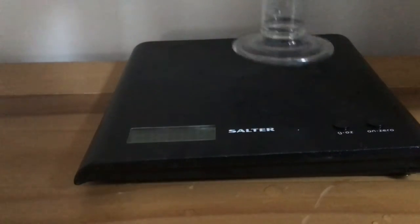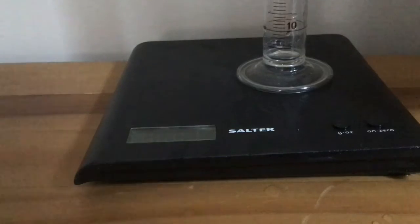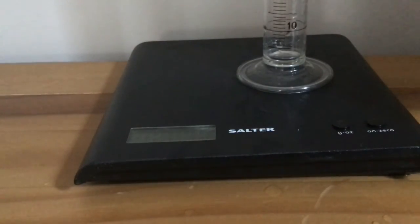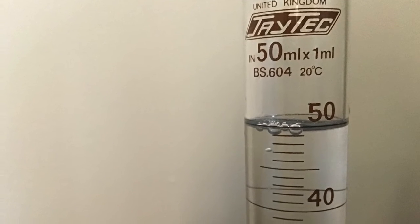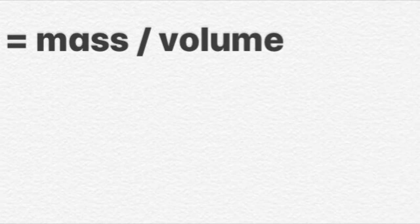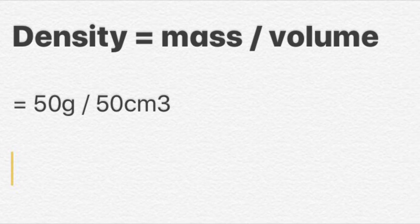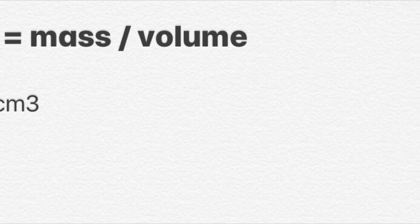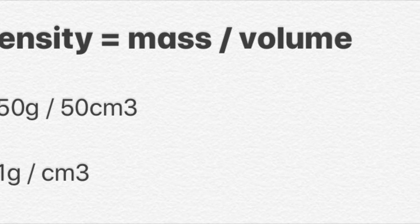Here's another experiment to find the density of water. We put a measuring cylinder on an electric balance and re-zero the balance, so it reads zero and we pour in exactly 50 centimetres cubed of water — measuring only the mass of the water. Looking closely at the measuring cylinder, you can see it's exactly 50 centimetres cubed and 50 grams on the scales. So using density equals mass divided by volume: 50 grams divided by 50 centimetres cubed equals 1 gram per centimetre cubed. The density of water is 1 gram per centimetre cubed.